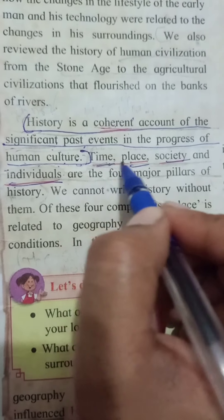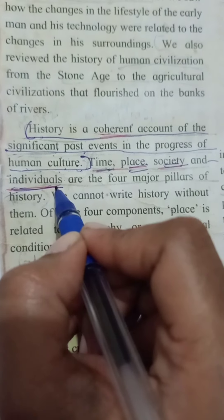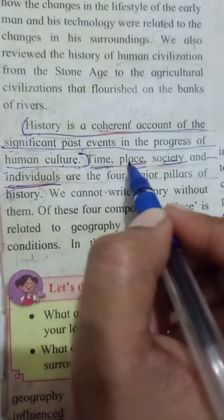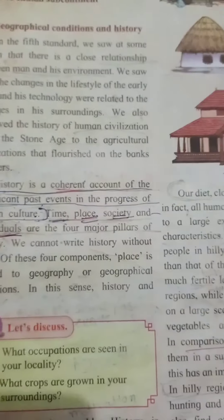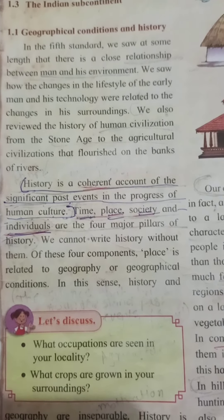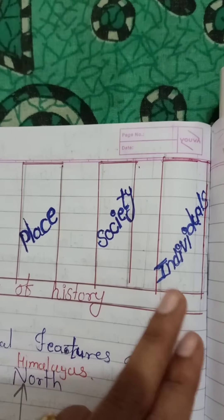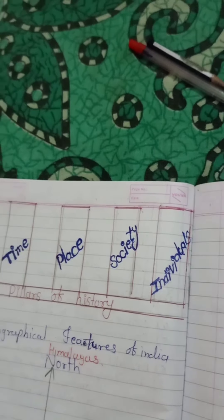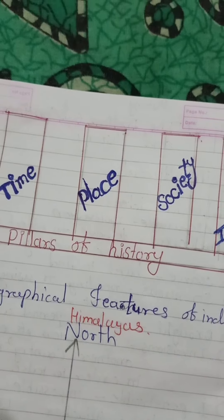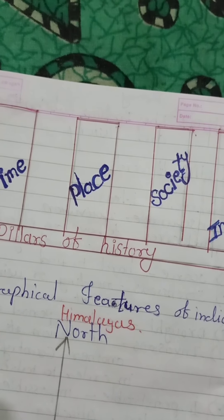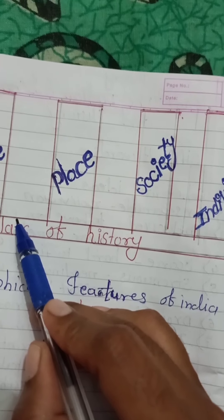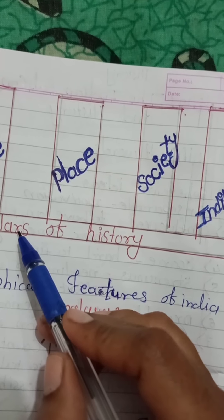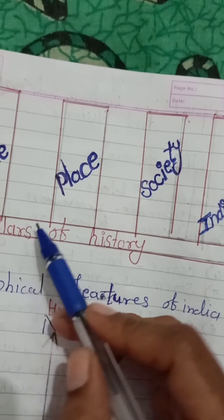There are four pillars of history: time, place, society, and individual. You have to underline that. These are the main four pillars of history. Without these four components we cannot write history. Here, place is related to geography and geographical condition. In this sense, history and geography are inseparable.